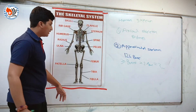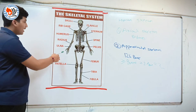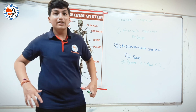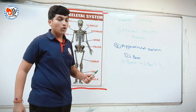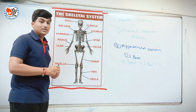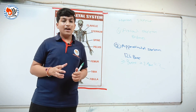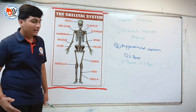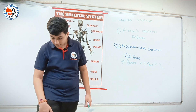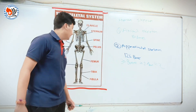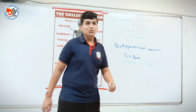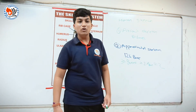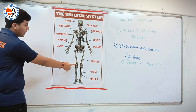Now we will see our leg. First is pelvis. Pelvis is present here in our body — it also provides a base to our body when we sit anywhere. Next, in our leg there is femur, present in this area. Second is patella, which is the kneecap.